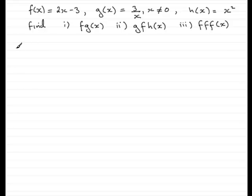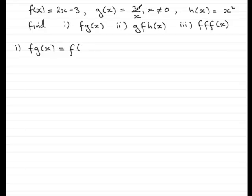Let's get started and look at part 1, fg of x. With this one, we've got f of g of x. So what is g of x? Well, it's 3 over x. So pop that in there — now we need to do f of 3 over x.